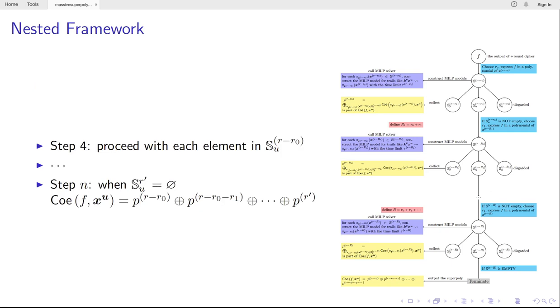When there is no undetermined set or the determined set is empty, the Super-Poly is totally recovered. We collect all the partial Super-Polys along the way and sum them up to the final Super-Poly.